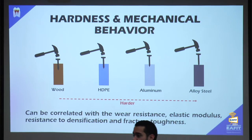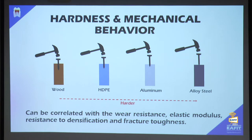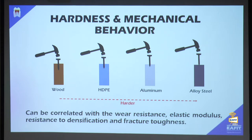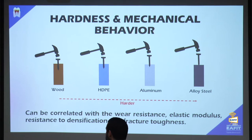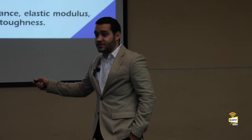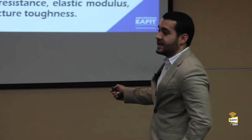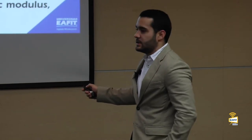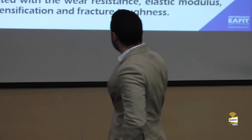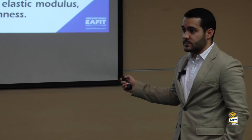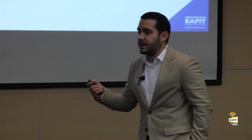We wanted to understand mechanical behavior, which can be represented by hardness. Hardness is a surface property that tells us how a material resists penetration by another. It correlates with wear resistance, elastic modulus, and fracture toughness. For example, if you take a nail and hammer with the same tip and force against wood, HDPE, aluminum, and alloy steel, you'll see progressively less penetration — that's basically how hardness works.